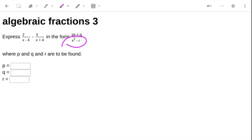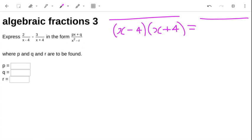Okay, now this x squared minus r doesn't look anything like these two. But if we consider that we could have x minus 4, x plus 4 on the bottom fraction, that would end up becoming x squared minus 16.